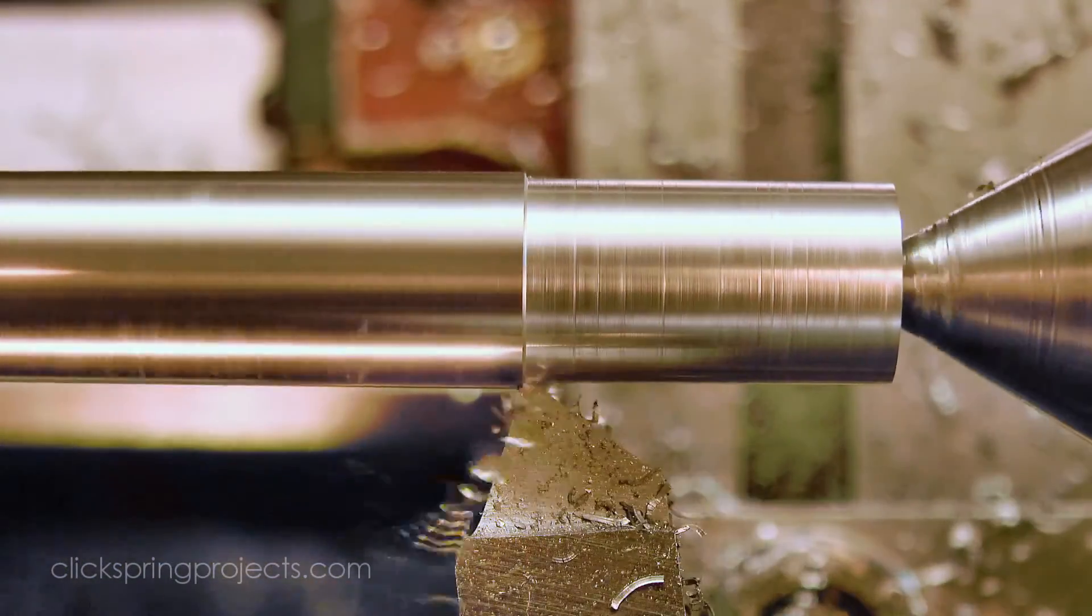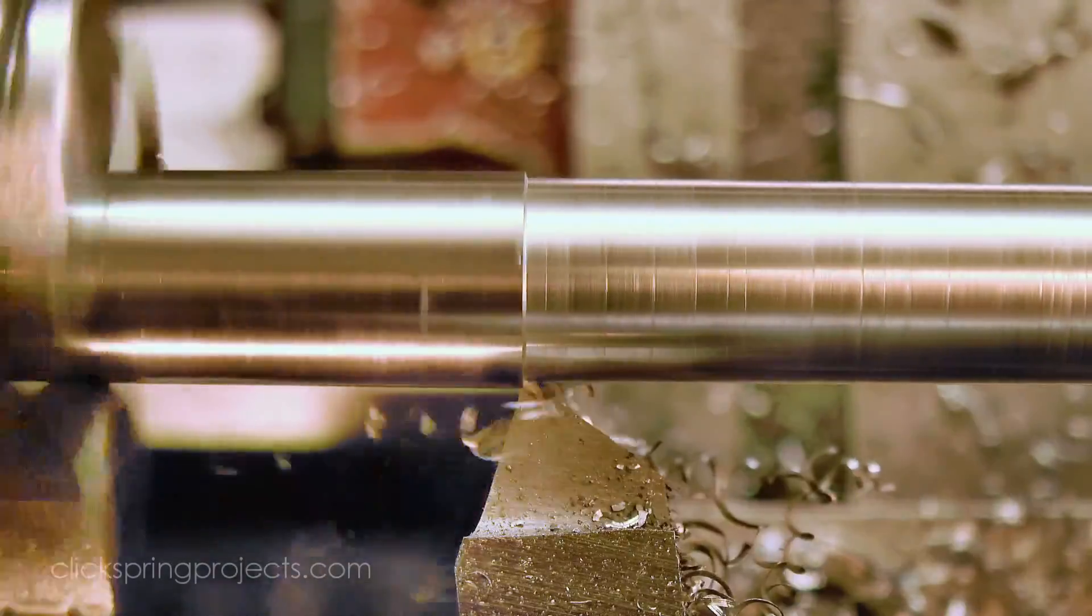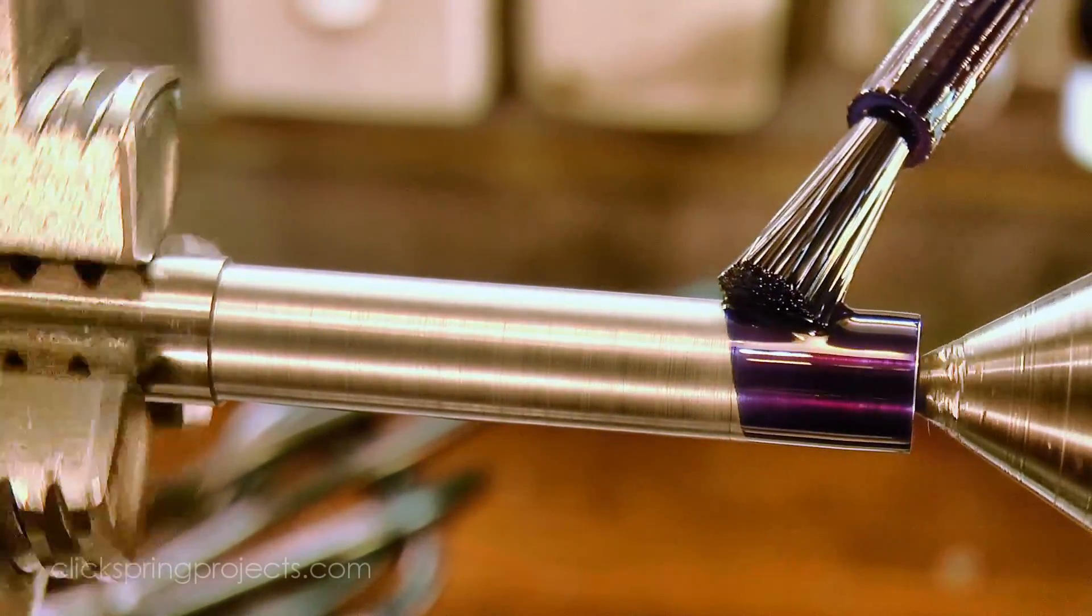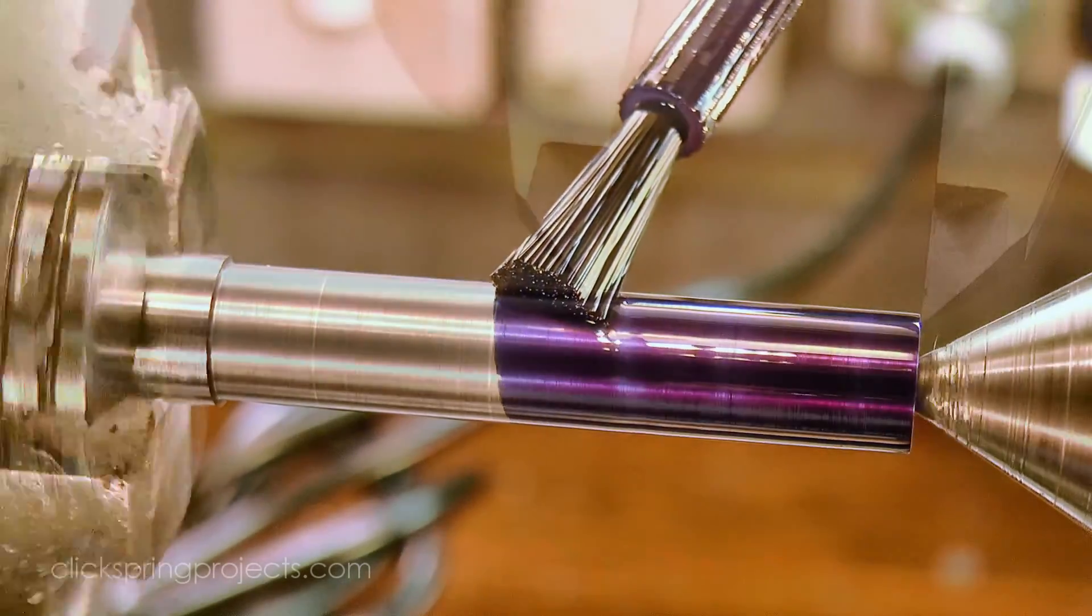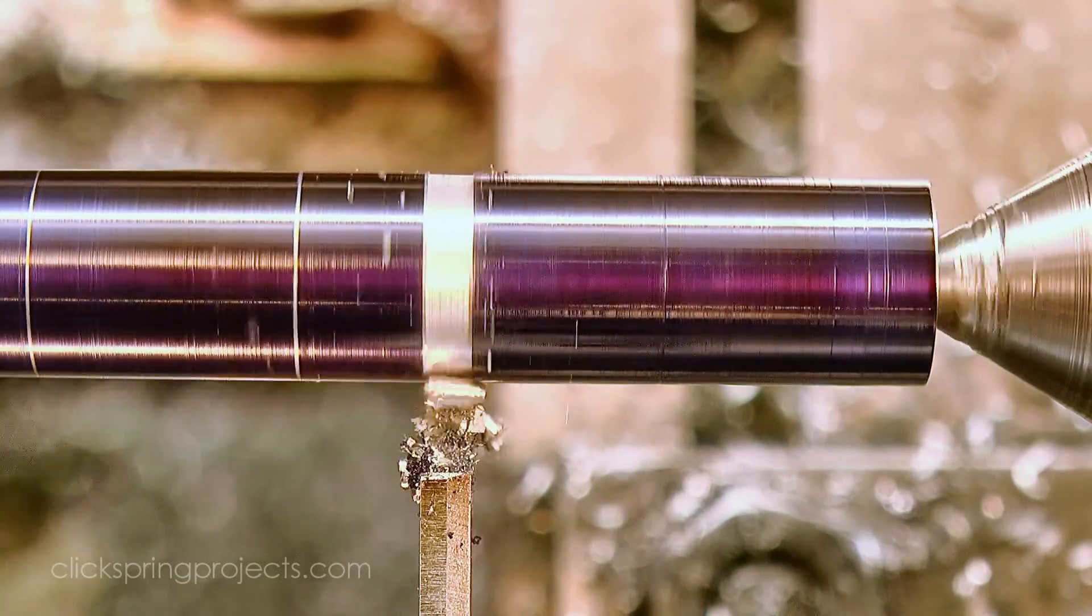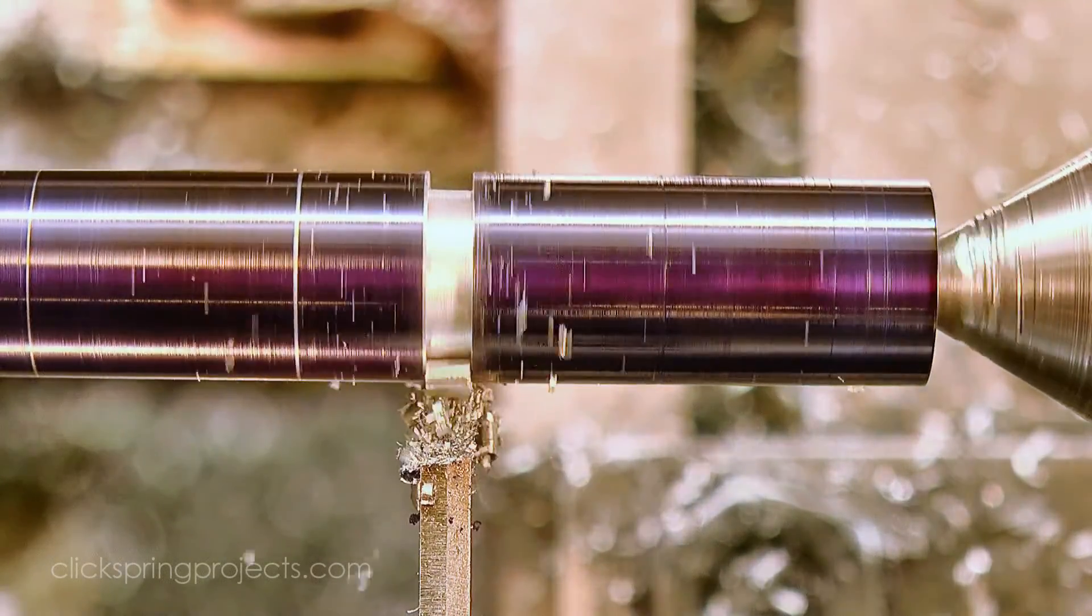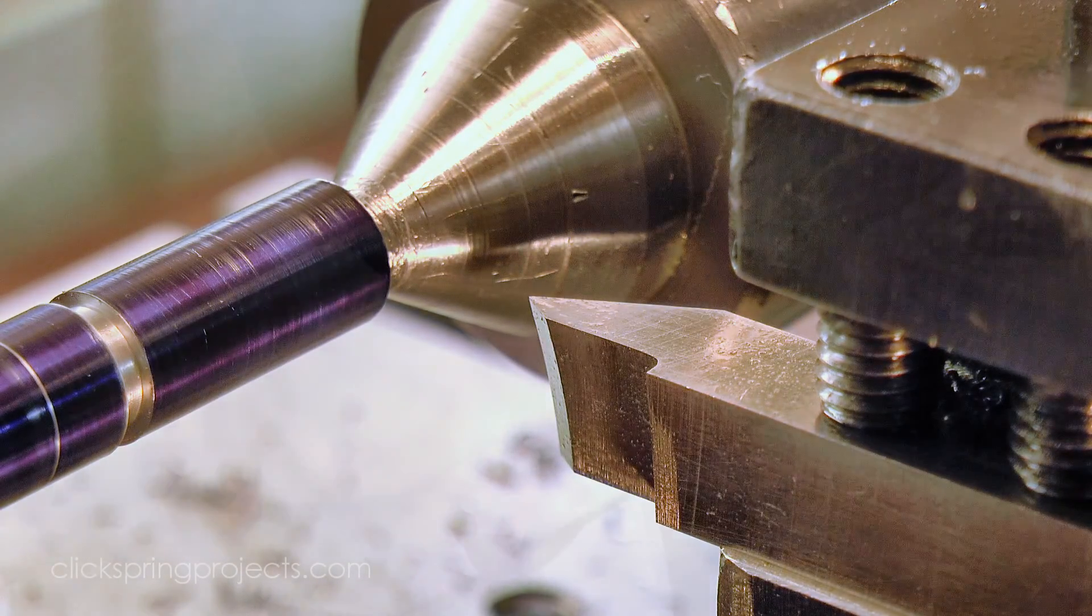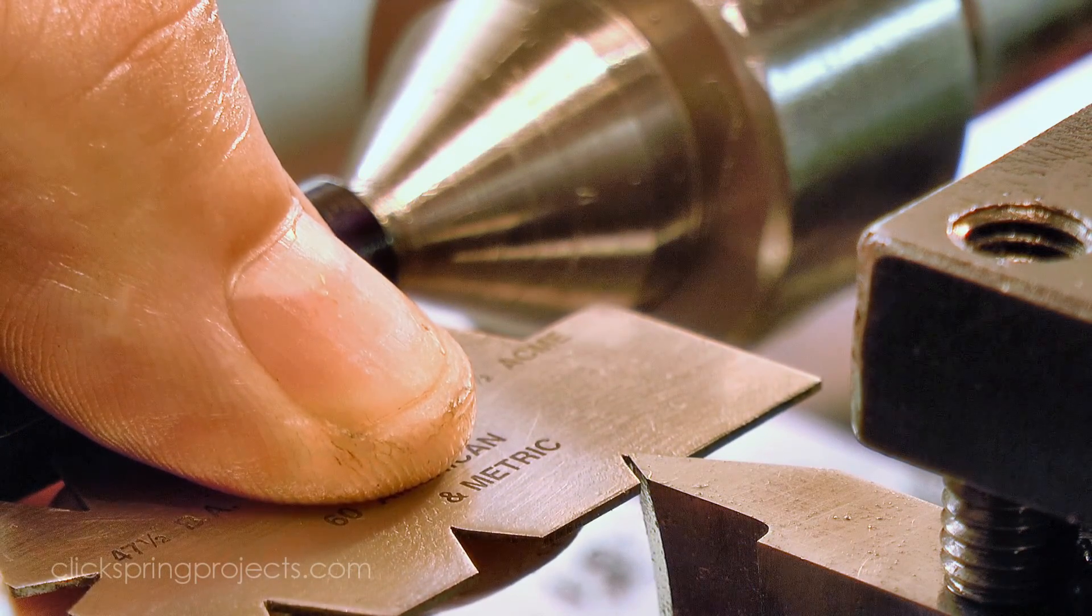From here I can turn the profile of the stock in preparation for forming the thread. The threading tool is now mounted on the tool post, and then set square to the work.